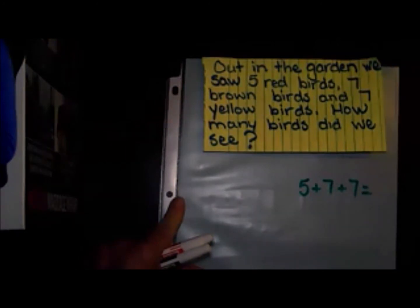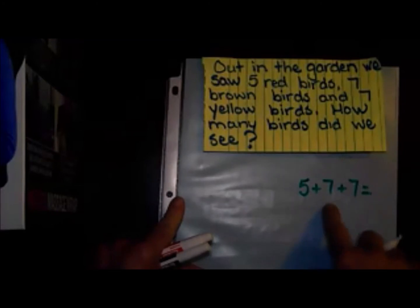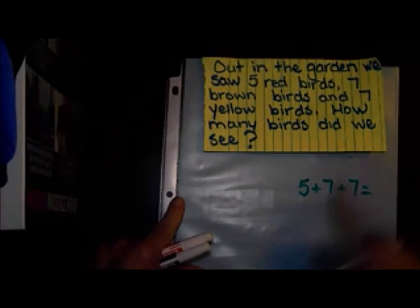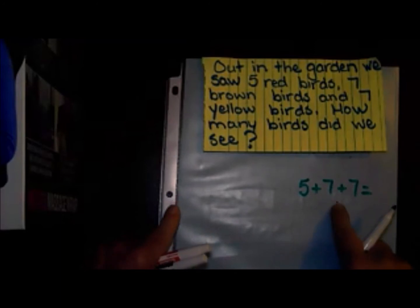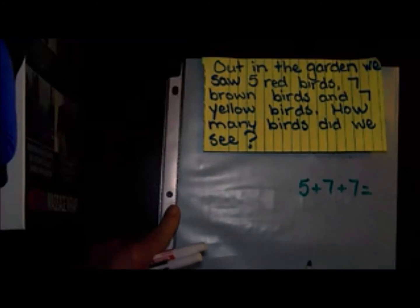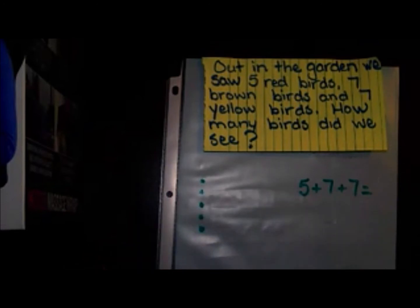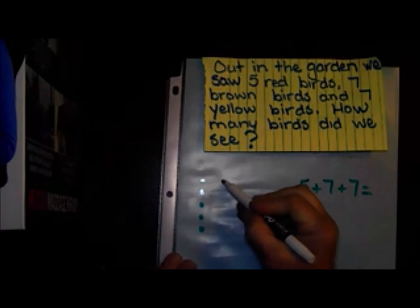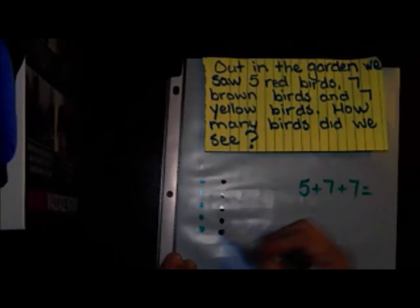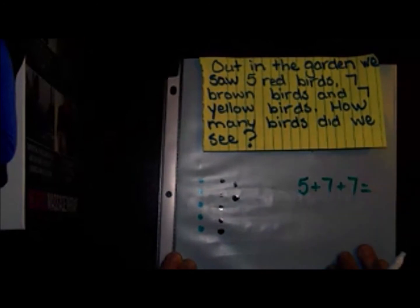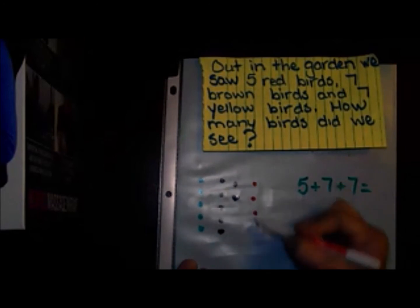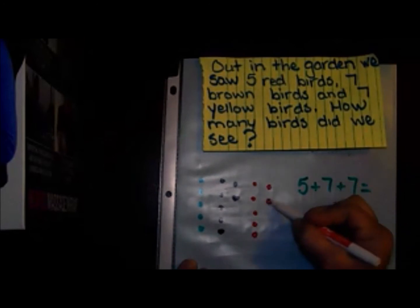As I'm thinking right now, I'm thinking about that seven and I know I need three more in order to make ten. I hope that you're noticing some of that going on in your brain as you're looking at this. Let's go ahead and draw it — here are those five red birds, and here are seven brown birds: five, six, seven. And seven more yellow birds.